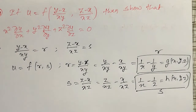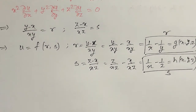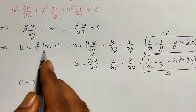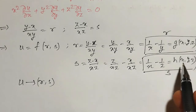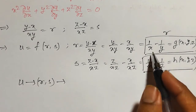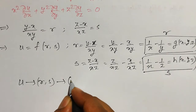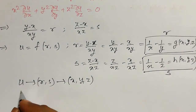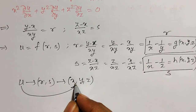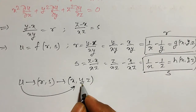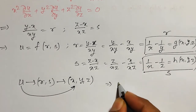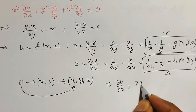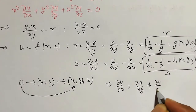What you can observe here is I converted the given problem into a composite function type. U is a function of r and s, and both r and s are functions of x, y, and z. Therefore, u is indirectly a function of three variables x, y, z. Therefore, for this u there exist three partial derivatives: ∂u/∂x, ∂u/∂y, and ∂u/∂z.